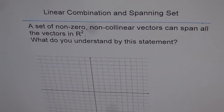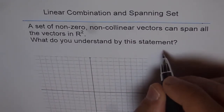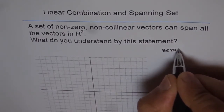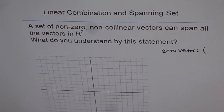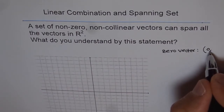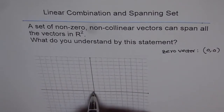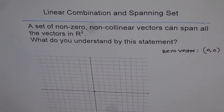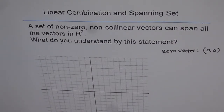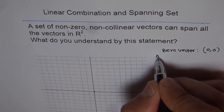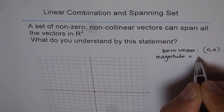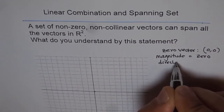So it says a set of nonzero vectors — let me tell you what are zero vectors so then you understand what is a nonzero vector. A zero vector in R2, which means the XY plane, has two components and both of them are zero. The zero vector has a magnitude of zero and its direction is undefined.